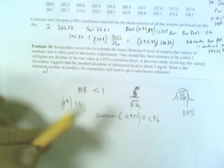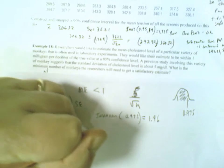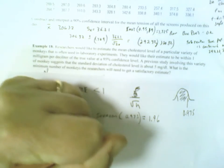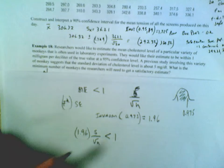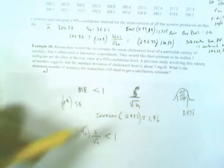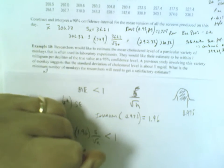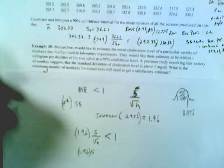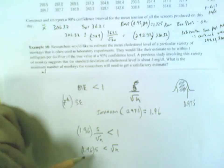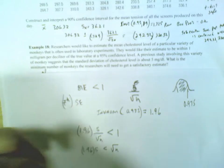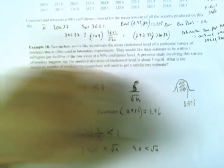So we want 1.96 times 5 over the square root of n to be less than 1. If we do a little quick algebra, I'll multiply top and bottom by square root of n. I'm going to have 1.96 times 5 less than the square root of n. Well, 1.96 times 5 is 9.8 less than the square root of n.